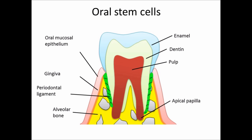Adult mesenchymal and epithelial stem cells remain in oral tissue. Here is a diagram of an immature tooth. From dental pulp, gingiva, and periodontal ligament, we can obtain mesenchymal stem cells, including dental pulp stem cells (DPSCs), stem cells from exfoliated deciduous teeth (SHEDs), stem cells from apical papilla (SCAPs), periodontal ligament stem cells (PDLSCs), and mesenchymal stem cells from gingiva.